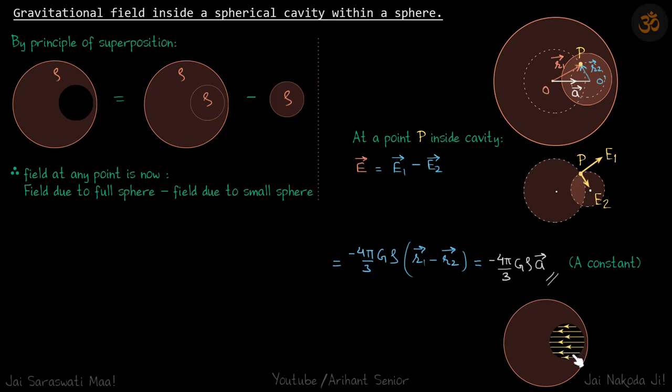If it is uniform, we can represent that field by these parallel lines which are equidistant to each other.